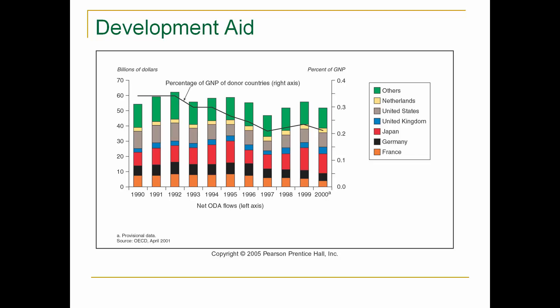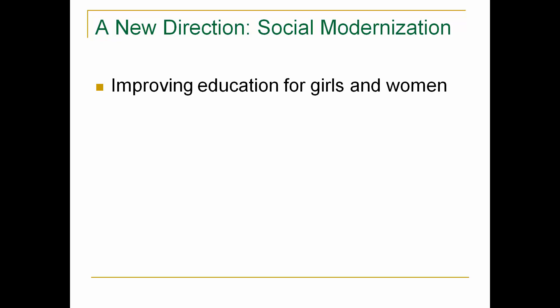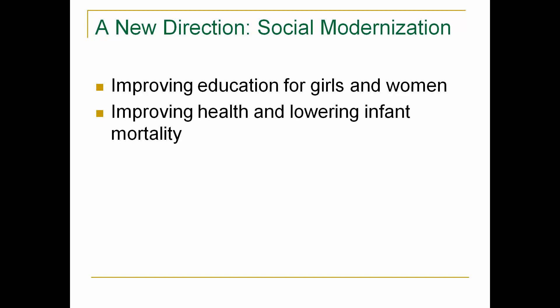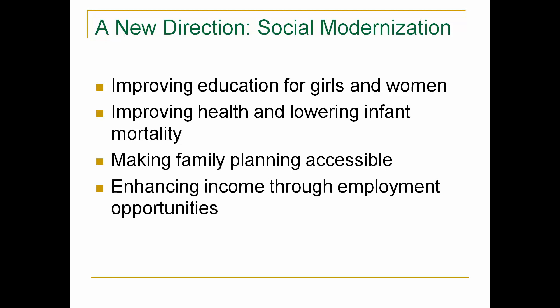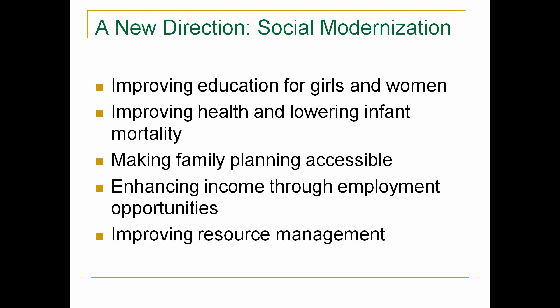This is embarrassing — 0.7% is what we agreed to, but the United States isn't even reaching 0.05%. No group is meeting that target. The only countries actually meeting the need are the developing nations. The rich countries are isolating themselves. Ted Turner and Bill Gates have given more money to try to stop overpopulation than the United States government has. The new direction includes improving education for girls and women, improving health and lowering infant mortality, making family planning accessible, enhancing income through employment opportunities, and improving resource management.